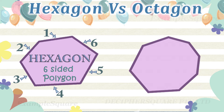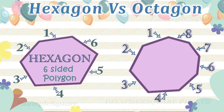This is a hexagon with six sides. And this is an octagon with eight sides.